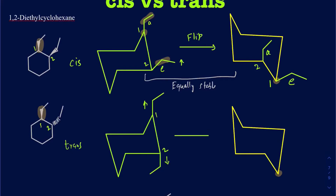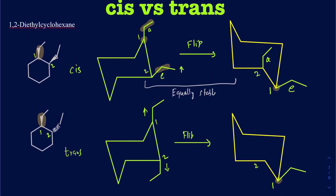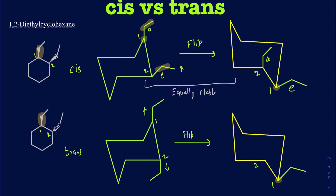When you flip it, carbon number one — before it was on axial, so now you make it equatorial. And then on carbon number two, it was axial before and it's again going to be equatorial, so you draw that slanted down. Both of those are now equatorial positions. In the first conformation, both of those were axial. So the second conformation is going to be more stable because you have two equatorial substituents, and in the first one both were in the axial.